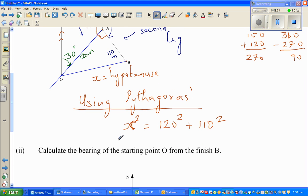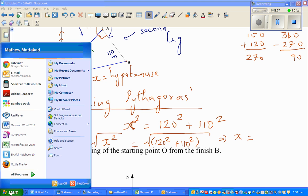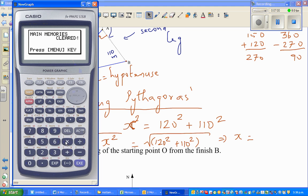Let me get my calculator out. I can go to run menu, then shift, square root, bracket, 120 squared plus 110 squared, close the bracket. That's 162.7.